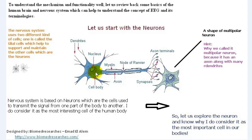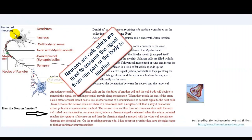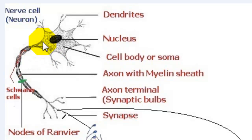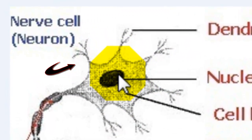The nervous system is based on neurons, which are cells used to transmit the signal from one part of the body to another. Here are the components and parts of the neuron. This is the dendrites — a hairy-like structure surrounding the cell body which conducts incoming signals. This is the nucleus, and this is the cell body, also called the soma.